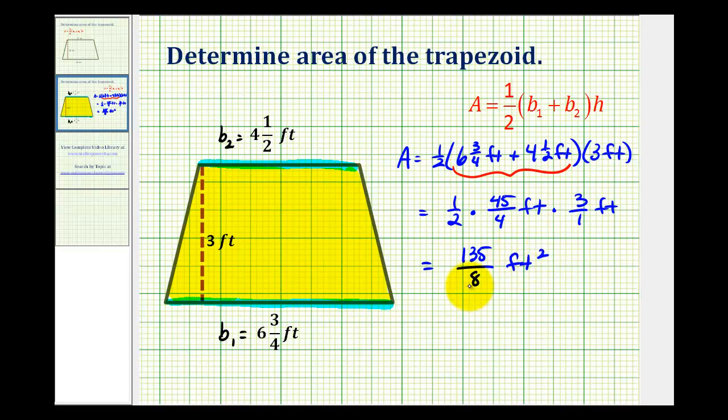But let's go ahead and convert this back to a mixed number. So we'll have one hundred thirty-five divided by eight. There's one eighth in thirteen. And there's six eighths in fifty-five. Six times eight is forty-eight. We have a remainder of seven.